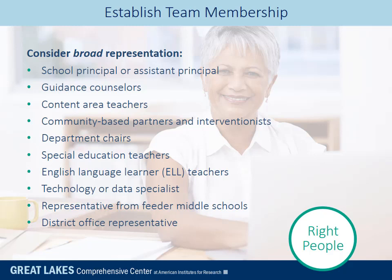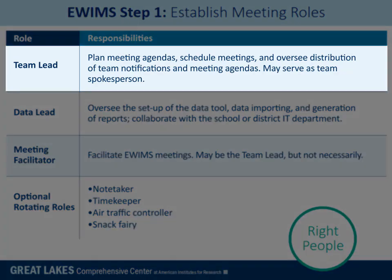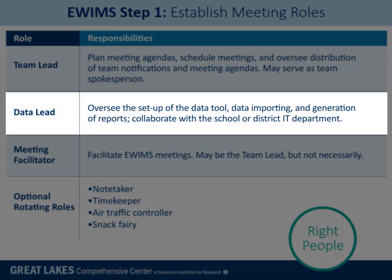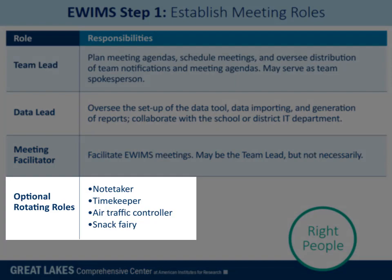When recruiting members for the team, be sure to explain that the team itself does not implement all of the relevant interventions. Team members help to identify those who are able to lead interventions and verify whether the interventions are implemented with fidelity. Occasionally they implement interventions, but not always. Once you have identified members who have agreed to be on the eWIMS team, you will need to determine roles. The following roles are critical: the team lead, the data lead, and the meeting facilitator. Optional rotating roles will be discussed shortly.